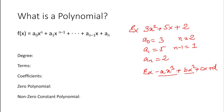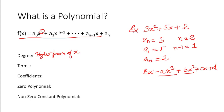Now, before going further let us understand some of the terminology used when defining a polynomial. First of all, what is the degree of a polynomial? The degree is the highest power of x in a polynomial. For example, in this polynomial the highest power of x is n, so the degree of this equation is n. For the polynomial 3x² + 5x + 2, the degree will be equal to 2, and for ax³ + bx² + cx + d the degree would be equal to 3.